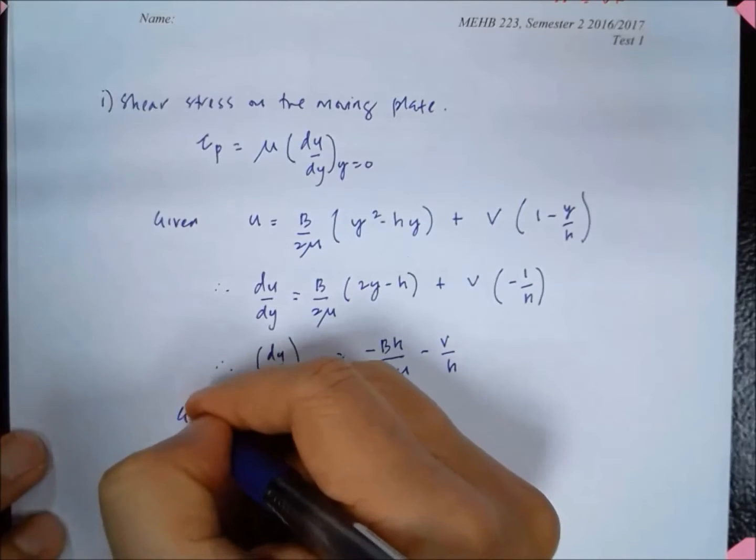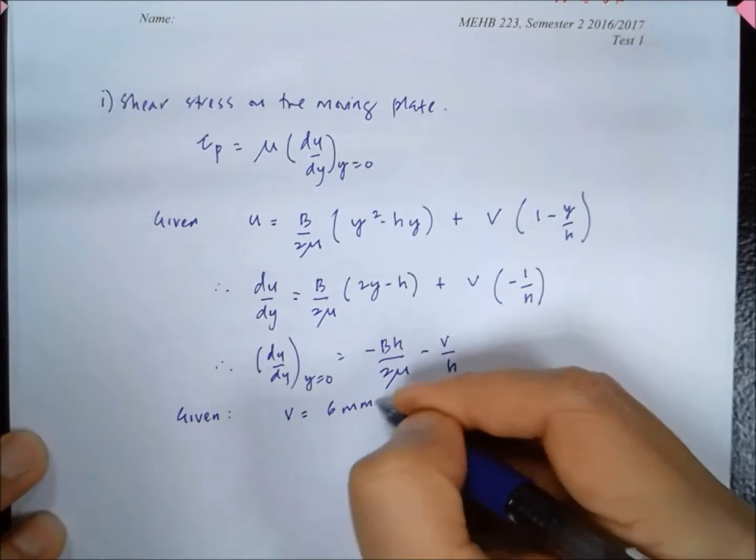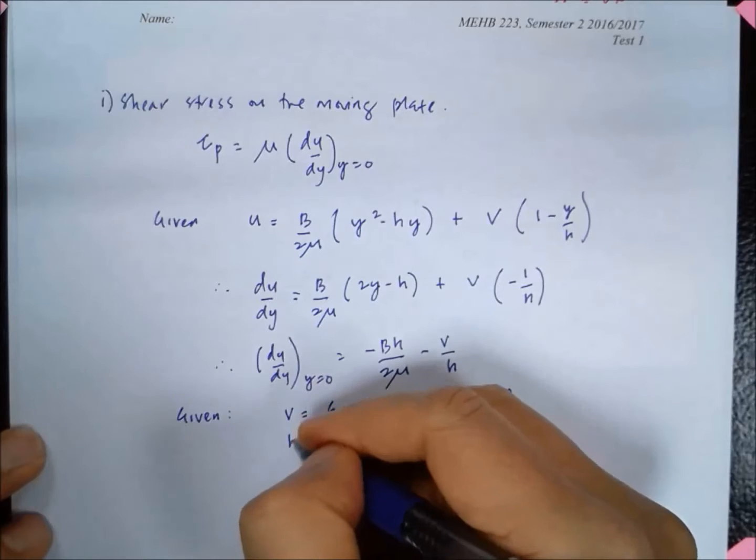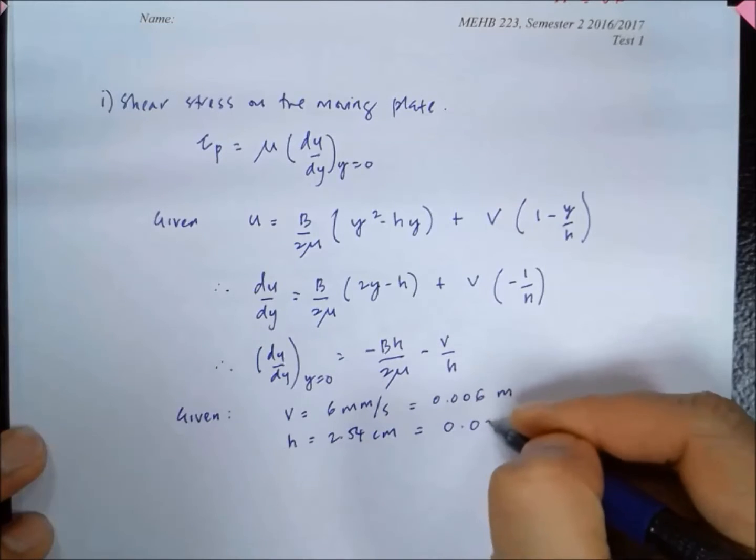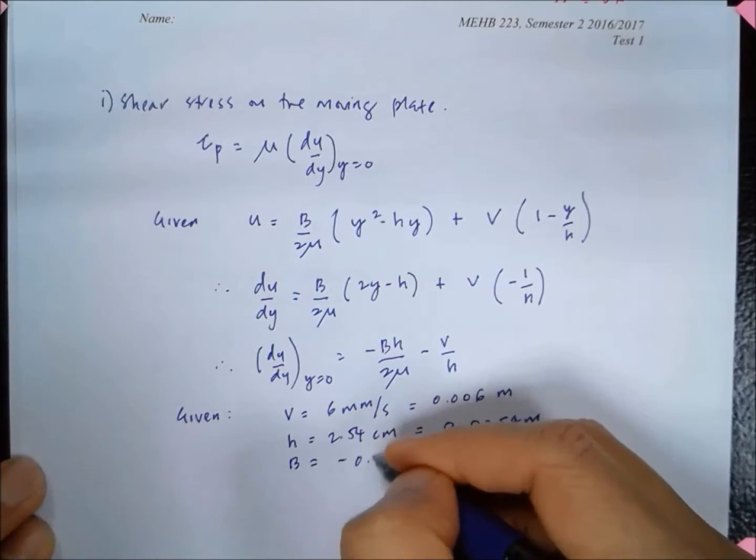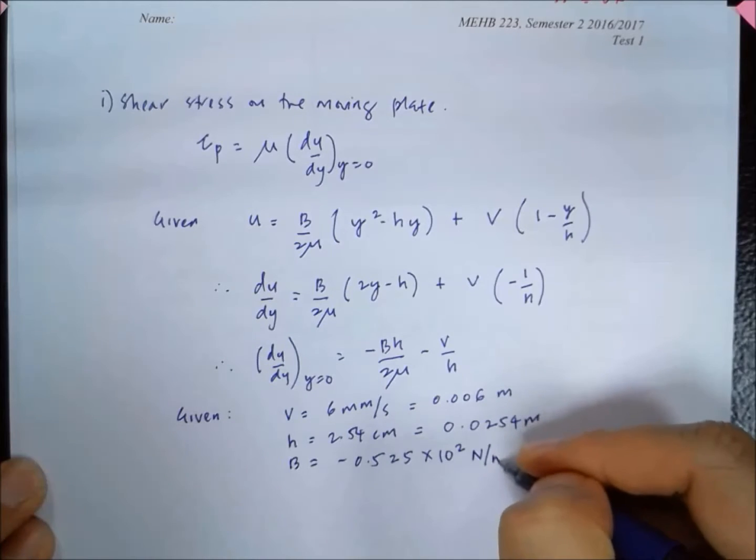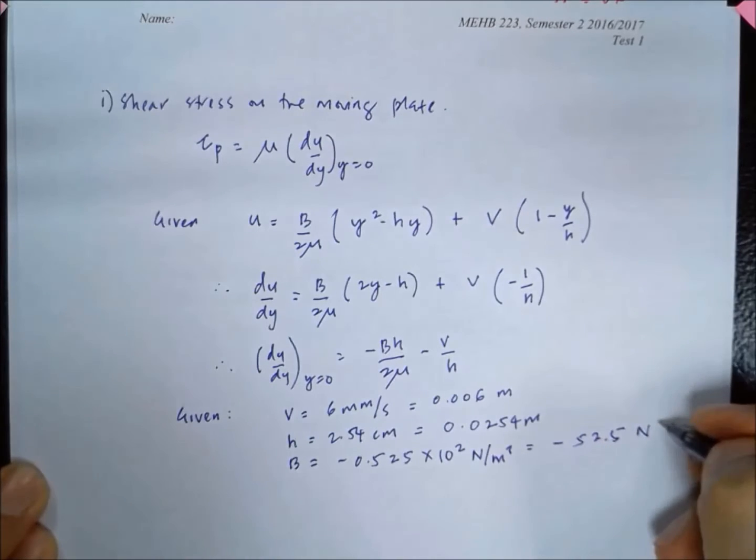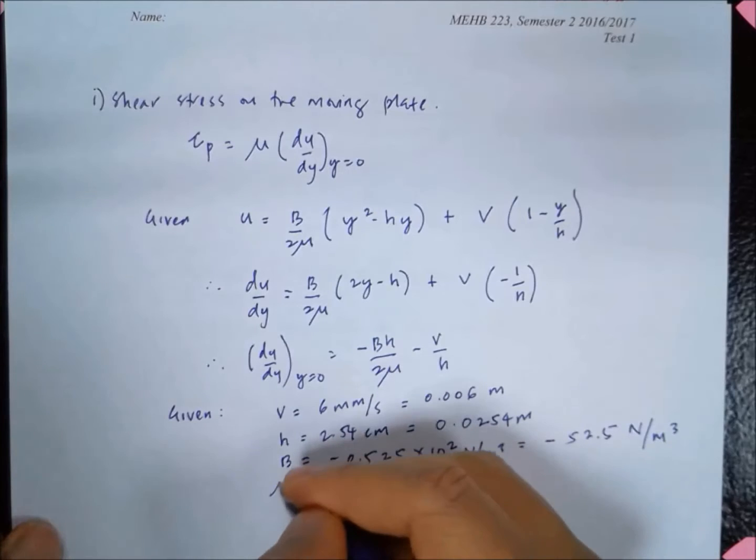We are given that V is equal to 6 millimeter per second, so that is 0.006 meter. h is equal to 2.54 centimeter, so 0.0254 meter. And B is minus 0.525 times 10 to the power of 2 newton per meter cubed, which is just equal to minus 52.5 newton per meter cubed.